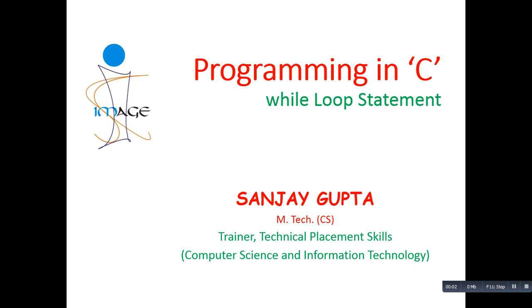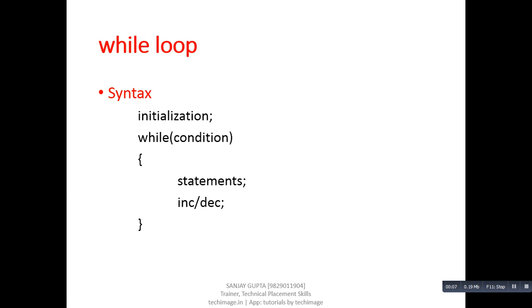Hello friends, I am Sanjay Gupta. In this tutorial I am going to discuss about the while loop. First of all, the syntax of while loop — as we have already discussed, every loop control has three parts: initialization, termination condition, and increment or decrement. In the case of while loop, all three parts are also available. Now I am going to explain the cycle of while loop.